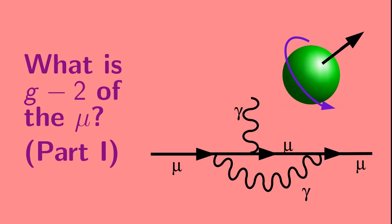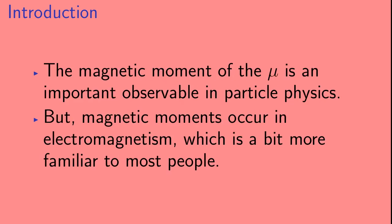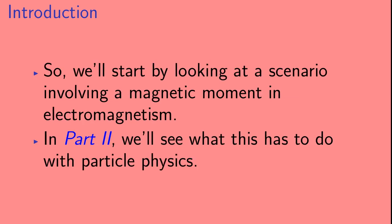Welcome to 'What is g minus 2 of the muon?' Part 1. Muon g minus 2 is very closely related to something called the anomalous magnetic moment of the muon. In this video we're going to talk about what a magnetic moment is. The magnetic moment of the muon is an important observable in particle physics, but magnetic moments also occur in electromagnetism, which is a bit more familiar to most people. We'll start by looking at a scenario involving a magnetic moment in electromagnetism, and in Part 2 we'll see what this has to do with particle physics.